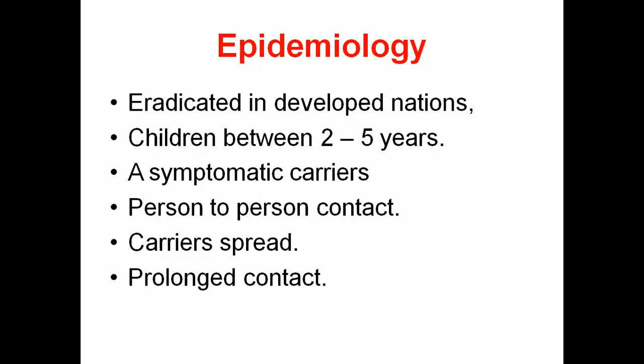Epidemiology: diphtheria is eradicated in developed nations. Children between two to five years are most commonly affected. Asymptomatic carriers are common. Person-to-person contact easily spreads the disease; carriers spread it more easily without signs and symptoms. Prolonged contact is needed for spread. Comparing to COVID: similar epidemiology in terms of spread. Currently, vaccination is more effective and reporting is very low.